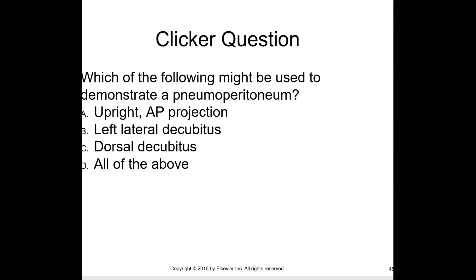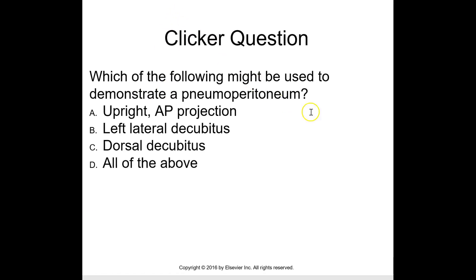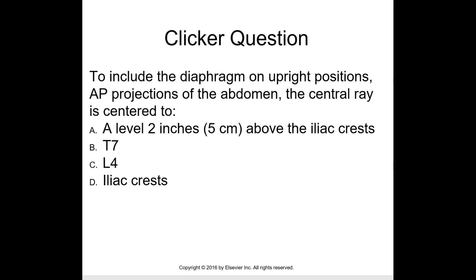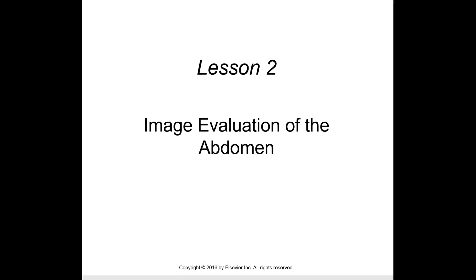A review question: which of the following might be used to demonstrate a pneumoperitoneum? The answer is D — all of the above. To include the diaphragm in the upright position AP projection of the abdomen, the central ray is centered two inches above the iliac crest.